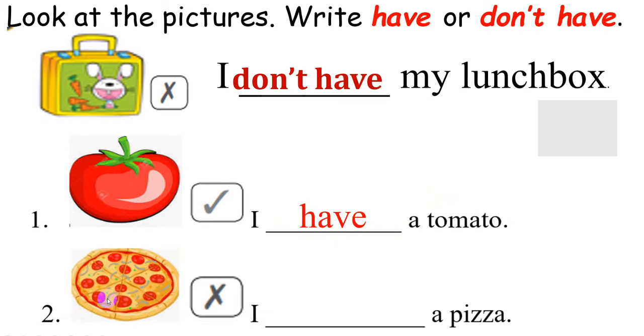Picture 2. This is a pizza. And can you see the cross? What can you write here? Have or don't have? You have 5 seconds. Let's check. I don't have a pizza. Well done.